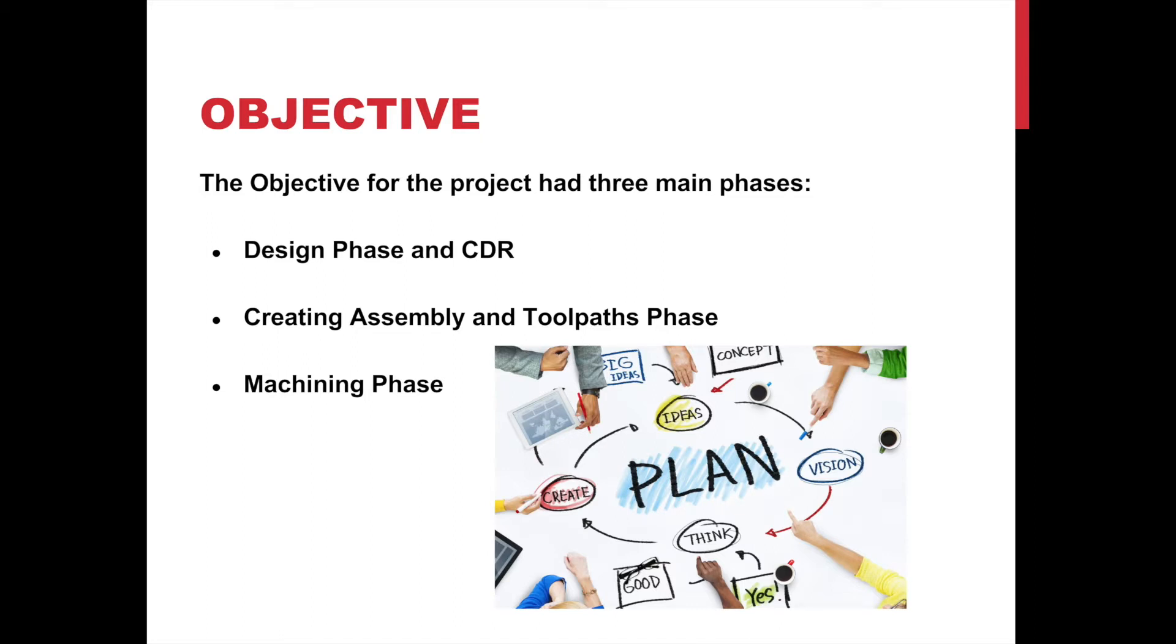The objective for the project had three main phases. One, the design phase and CDR. As a project team, design a fixture to hold a family of parts during their CNC milling operations. A conceptual design review with our professor aided in finalizing the fixture plate design. Two, creating assembly and toolpaths phase. Using SOLIDWORKS create assembly model configurations and virtually test them based on the project's constraints and criteria. Three, machining phase. Perform on-machine testing of the fixture design by running the HSM toolpaths on the Haas VF2 CNC mill.